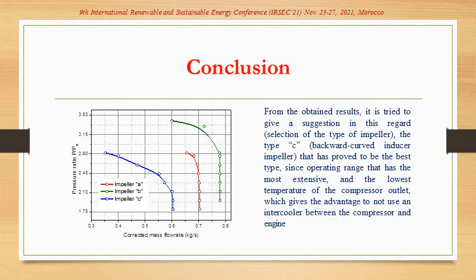As a conclusion from the obtained results it is tried to give a suggestion in this regard of selection of the type of impeller the type C backward curved inducer impeller that has proved to be the best type since operating range that has the most extensive and the lowest temperature of the compressor outlet which gives the advantage to not use an intercooler between the compressor and engine.